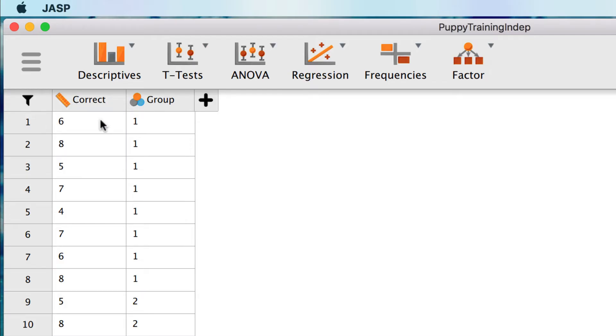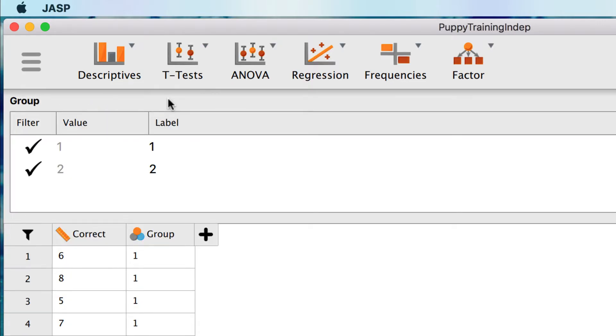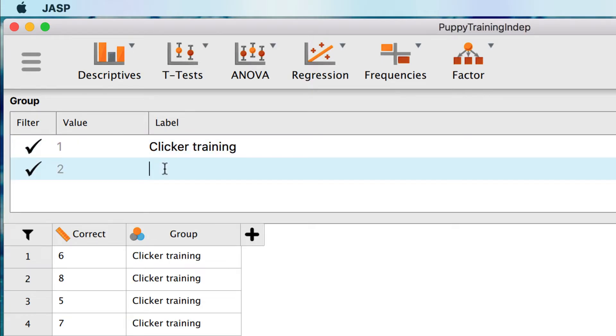The second variable is group, which is at the nominal level, indicating that it defines the two groups. I don't need to change the column type, but if you move the cursor to the right, we can click here to change labels. The values are 1 and 2. For value 1, let's assign the name clicker training. And for value 2, we will assign food reward.